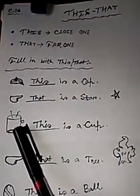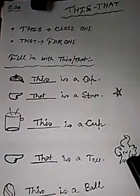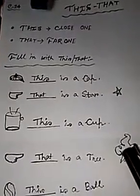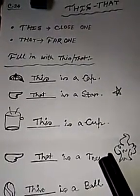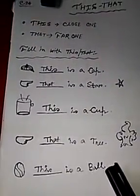Cup - this cup is near to you, so 'this is a cup'. Again, the tree is far away. This is indicating the tree is far away, so 'that is a tree'.